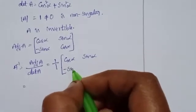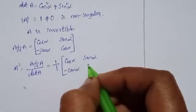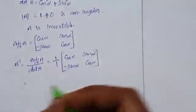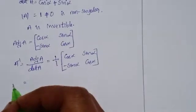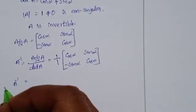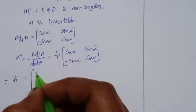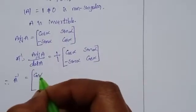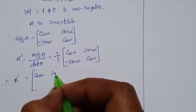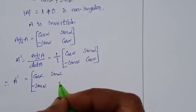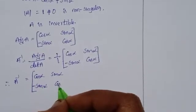The result is: A inverse equals the matrix with cos alpha, sin alpha, minus sin alpha, cos alpha.